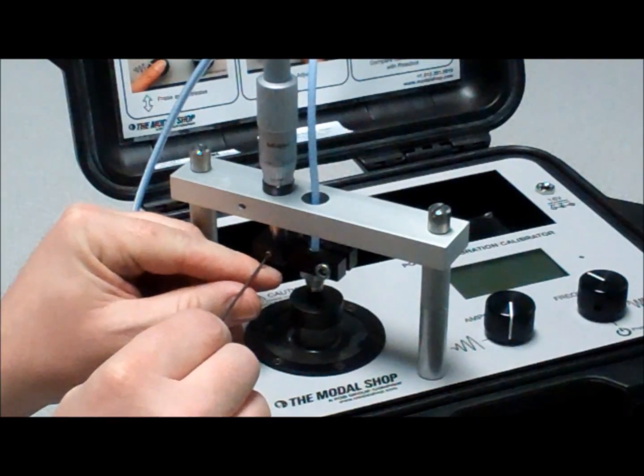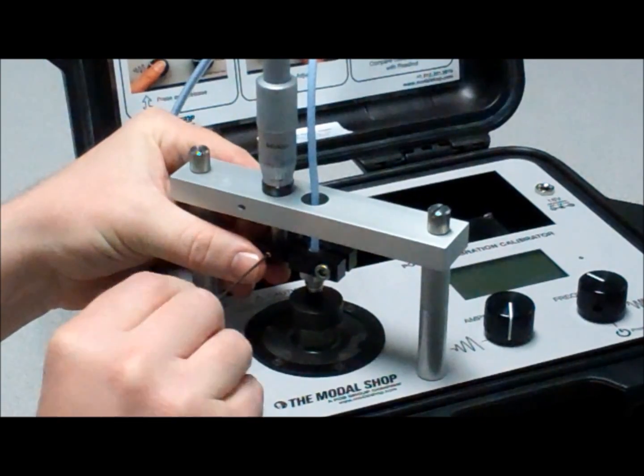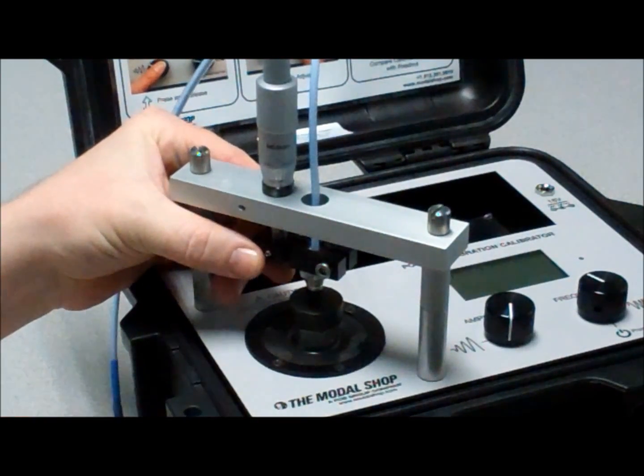Now set the height of the Proximity Probe to the target using a hex key to tighten the set screw against the micrometer.